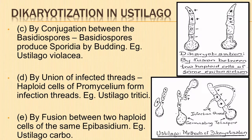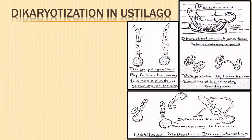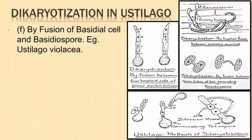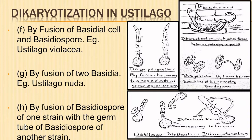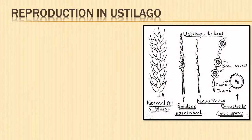Dikaryotization may occur by fusion between the two haploid cells of opposite strains of the same basidium, as in Eustilago hordei and Eustilago carbo. A dikaryotic cell can also be formed by the union of a basidiospore with one of the basidial cells of the opposite strain, as in Eustilago violacea. Dikaryotization can also take place by fusion of two basidia — a dikaryotic cell formed by fusion between two basidia from germination of smut spores of opposite strains, as in Eustilago nuda. It can also occur by fusion of the basidial spore of one strain with the germ tube of the basidial spore of another strain.